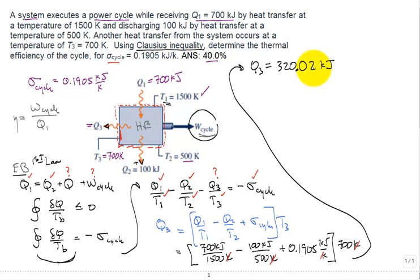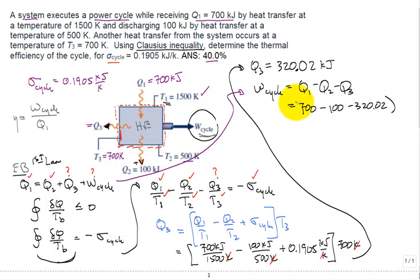That's a positive Q3 that we've written, but we know the direction is it's taking energy out of the heat engine. Now that we know that, we can go back to our first law. The work of the cycle equals the heat in at 1 minus Q out at 2 minus Q out at 3. That's 700 kilojoules in, 100 kilojoules out, and 320.02 kilojoules out. The work of the cycle comes in at 279.98 kilojoules.